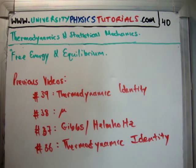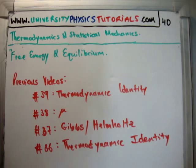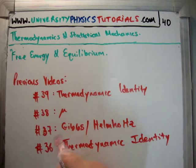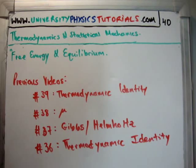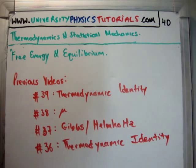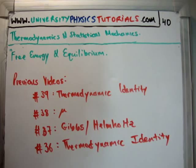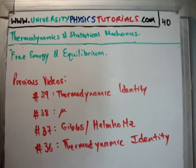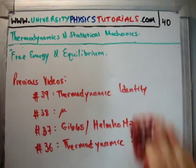The previous videos to this, there are four relevant ones. I'd like to point out that in video number 39, I listed the numbers on the previous videos incorrectly. Anyway, look at number 39, where I discuss the thermodynamic identities in terms of the Gibbs and Helmholtz free energies and the chemical potential. Number 38, I discuss the chemical potential. 37, I discuss the Gibbs and Helmholtz free energies. And number 36, I discuss the most basic thermodynamic identity.